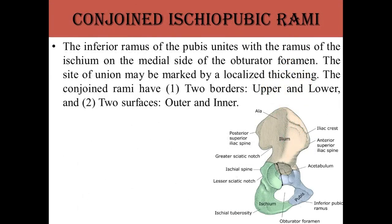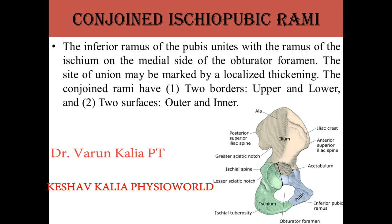Next is the conjoined ischiopubic rami. The inferior ramus of the pubis unites with the ramus of the ischium on the medial side of the obturator foramen; the site of union may be marked by a localized thickening. The conjoined rami have two borders (upper and lower) and two surfaces (outer and inner).